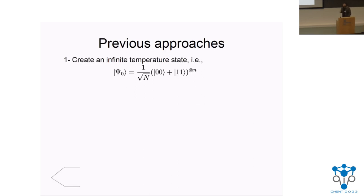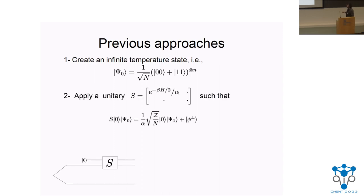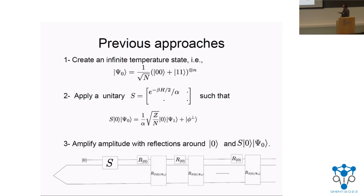What do previous approaches do to tackle this problem? They start from the purification of the infinite temperature state, which is easy to prepare — it's just log(N) Bell pairs. Then they block-encode the operator e^{-βH/2}, rescaled by a factor alpha so that the operator is unitary. When you apply this to the initial state you get your target state with some amplitude and some garbage. You then amplify this amplitude by reflecting around an ancilla zero that flags the good part, and the number of amplitude amplification rounds is essentially the inverse of this amplitude.